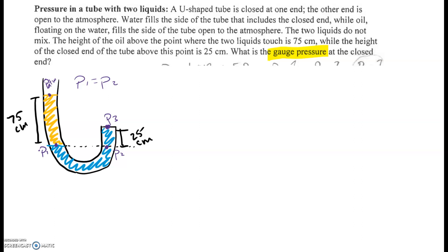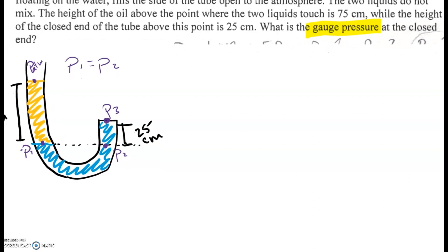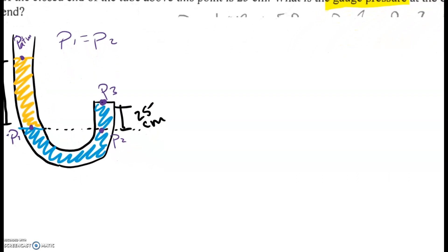So listing some things we know or some things we might need. Looks like we're dealing with oil and water. So we need the density of those. Let me zoom in a little just so I can write better. We are dealing with atmospheric pressure. I'm going to write that down so I remember. It's 1.013 times 10 to the 5th Pascals.